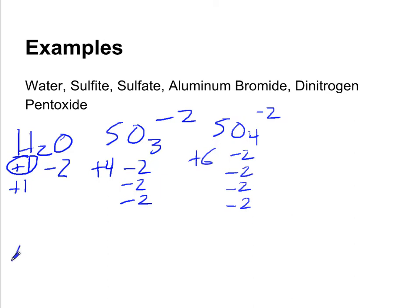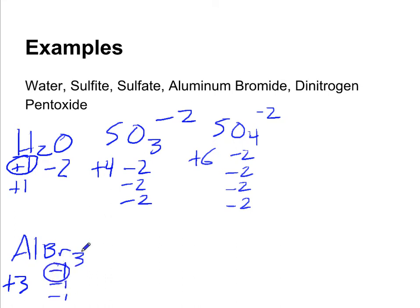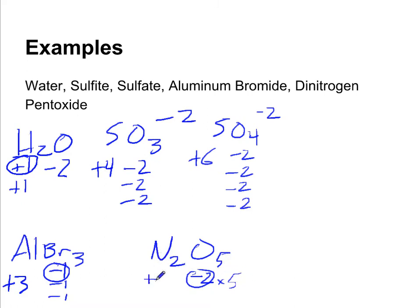Let's look at aluminum bromide — this is a fairly easy one. We can just take the charges from these ions from the periodic table: aluminum has an oxidation state of plus three, and bromine has an oxidation state of minus one. Now let's look at dinitrogen pentoxide, N₂O₅. We have five oxygens, each with a negative two oxidation state. This is a neutral compound, so the two nitrogens must add up to equal positive ten. That means each nitrogen has an oxidation state of positive five.